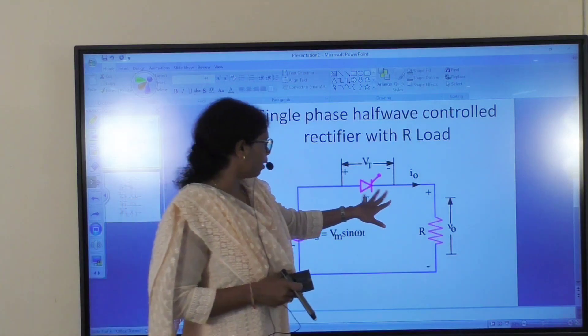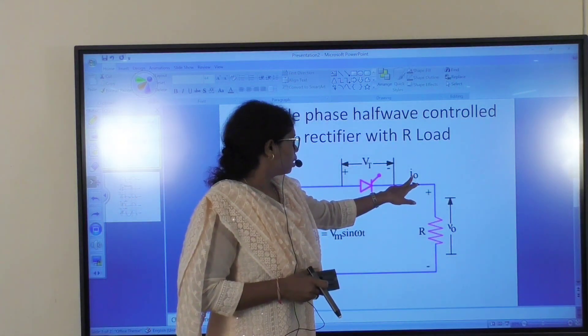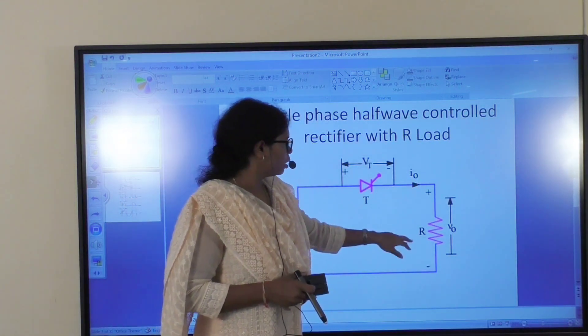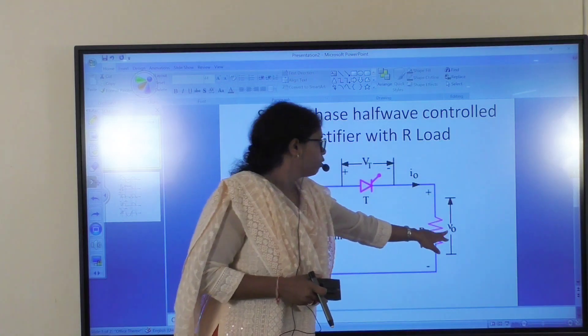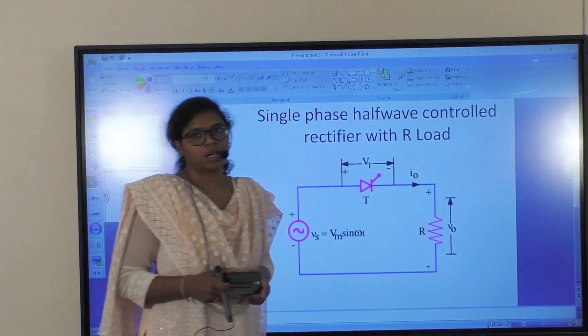Here, anode and cathode are not specified. I0 is the output current. Here, R is the resistive load. V0 is the voltage across our resistor.